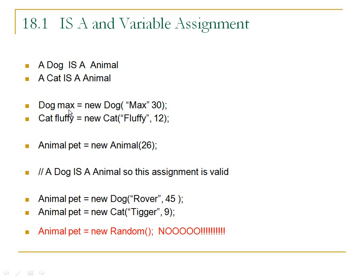Here's the declaration of a reference variable of type dog, and we can make an instance of the dog class and assign it to that reference variable. Here's a reference variable of type cat and a creation of a new cat object, and similarly an animal. Now this is the part that's new. A dog is an animal, so this assignment is valid. The data type of the pet variable is animal, and because a dog is an animal we can assign a dog to the variable pet. Similarly, we could assign a cat object to a variable whose data type is animal, because a cat is an animal.